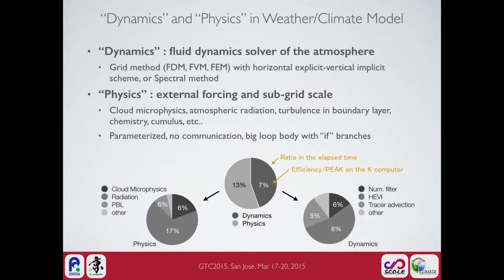The physics processes are usually parameterized with no communication between other nodes, and the code usually has a big code body with conditional branches. In NICAM's case, the elapsed time ratio of dynamics and physics is nearly 50/50. The peak efficiency of physics is larger than that of dynamics because dynamics has stencil operations while physics has higher computational intensity.